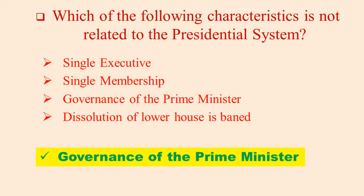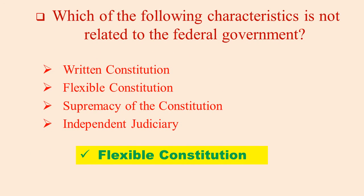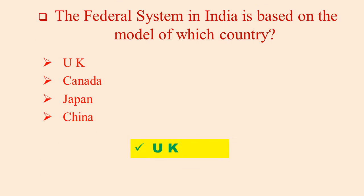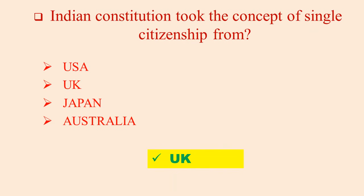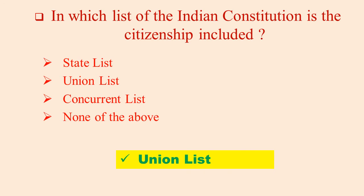Which of the following characteristics is not related to the Presidential System of governance? The role of the Prime Minister. The Federal System in India is based on the model of which country? UK. The Indian Constitution took the concept of Single Citizenship from UK.